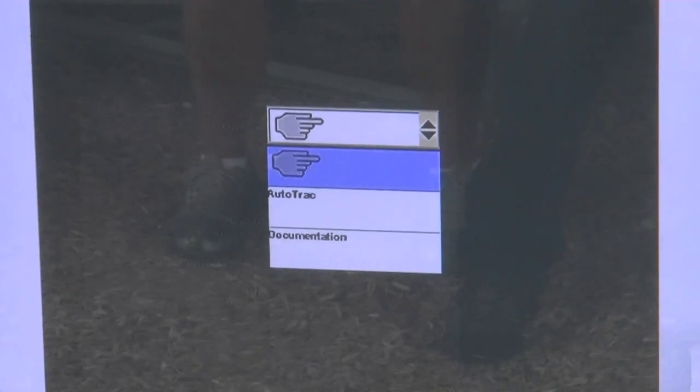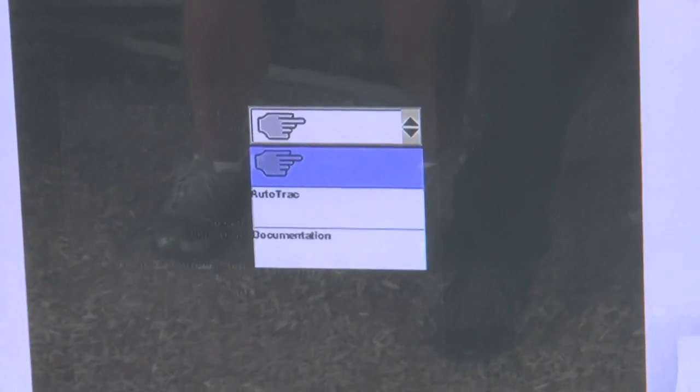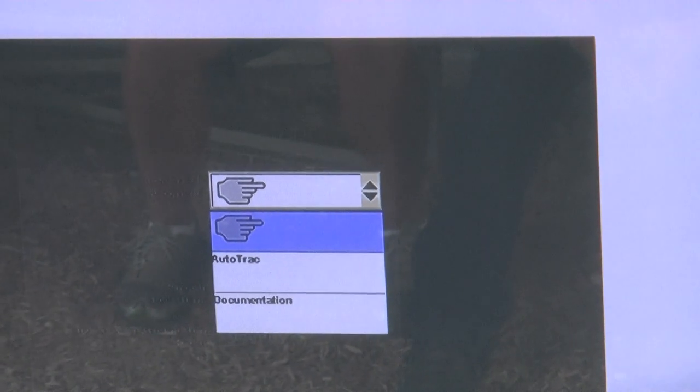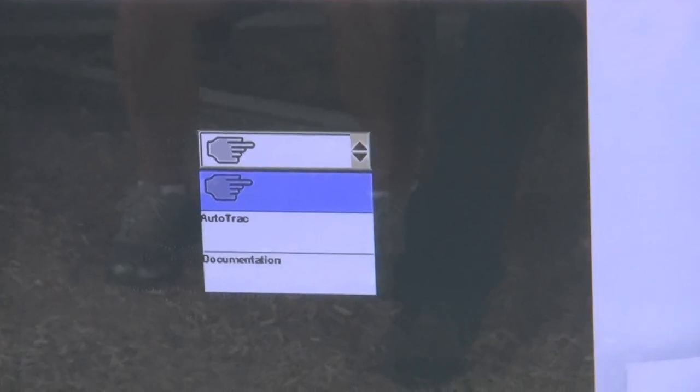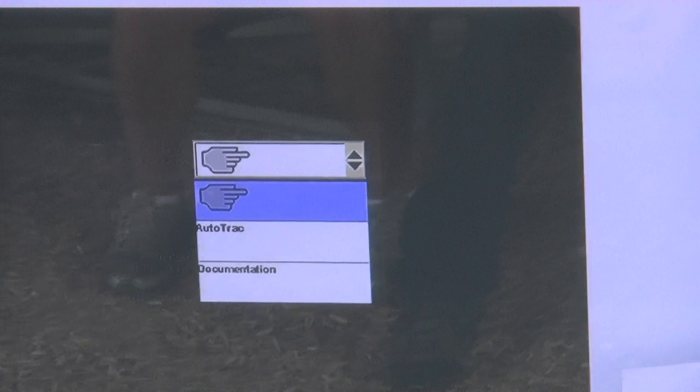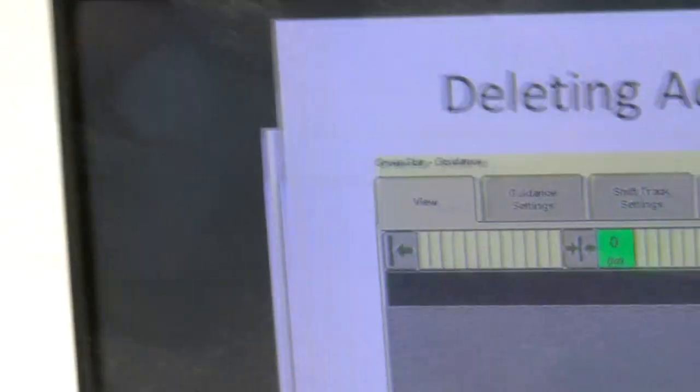The other recording source is going to be documentation. With documentation, same thing as auto track. The only time it's going to create a line is when the implement's in the ground and documenting. If you pick it up, you will have that gap. But with these two options, when you make those turns on the end, how many times are you watching back and all of a sudden the tractor darts off this way and you just grab it real quick? This will help us curb that. Because now once that little jog you put in there, it re-creates it again. So this is going to help us smooth out those adaptive curves a little bit more.